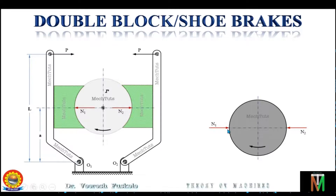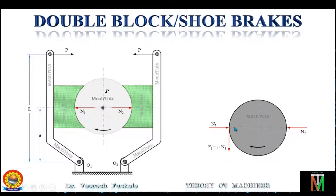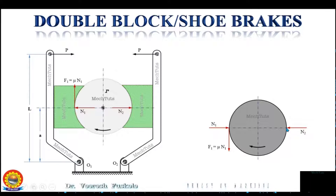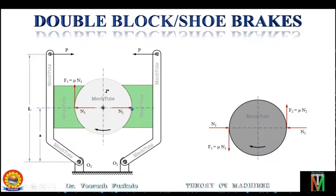As the drum is rotating in the clockwise direction, at the point on the left side of the drum the velocity will be in the upward direction. So the friction force will act in the downward direction on the drum. F1 is the friction force on the left-hand side; an equal and opposite frictional force acts on the block in the upward direction. Similarly, on the right side of the drum, the velocity is in the downward direction, so the friction force acts in the upward direction on the drum. F2 is the force of friction on the drum, and the equal and opposite friction force on the right-hand side block will be in the downward direction.